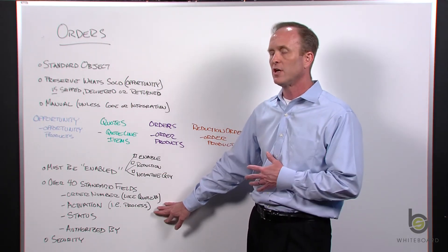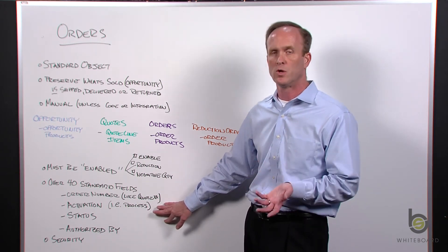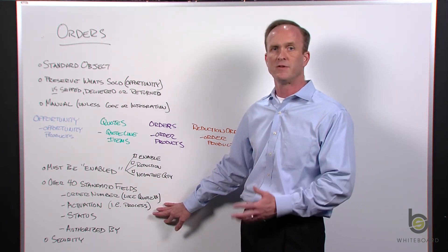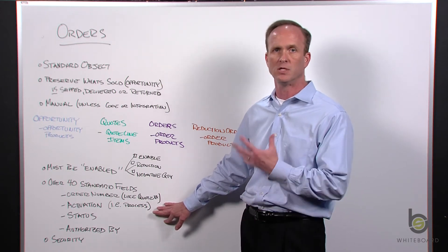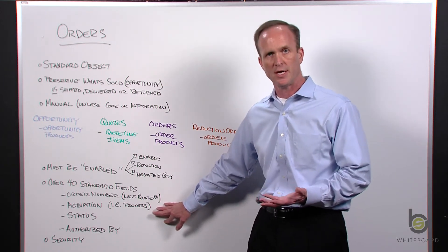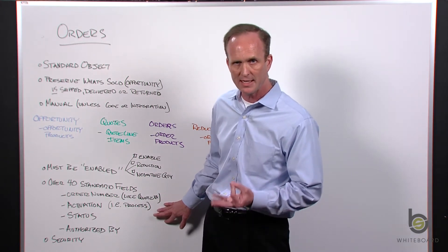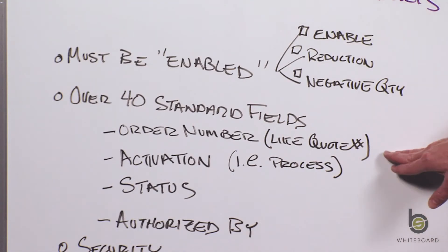Since we've already discussed that if you've used opportunities and products, quotes and quote line items, a lot of the fields and concepts are very similar. There are over 40 standard fields. I didn't want to list them all and bore you to death, but let me hit a couple of things that are unique about orders. One is there's an order number - it auto numbers just like when you create a quote record. There's the same concept when you create an order record.